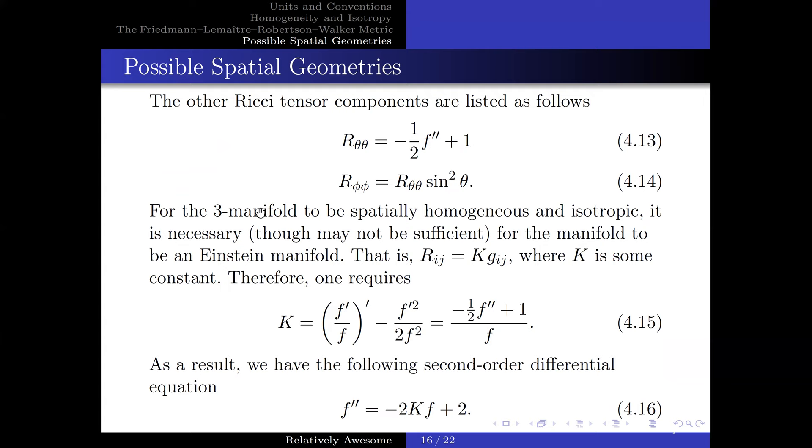The other Ricci tensors are listed as follows. And for the 3-manifold to be spatially homogeneous and isotropic, it is necessary, though not sufficient, for the manifold to be an Einstein manifold. That is that R_ij is equal to Kg_ij, where K is some constant. Therefore, one requires this. And as we can see, this is a second order differential equation, and it is relatively easy to solve.